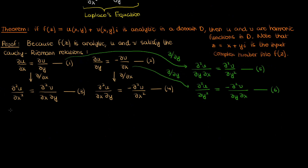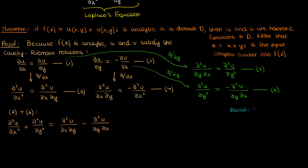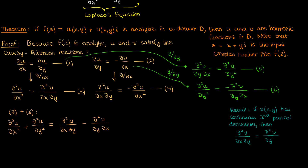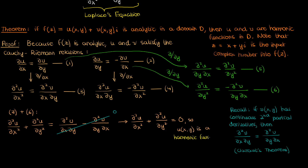Let's now combine these equations. We'll start by adding equations 3 and 6. When we do that we'll get the sums of the second partials of u in x and y on the left, and the difference between the mixed partials of v on the right. Now recall from basic multivariable calculus that if v is a nice continuous function with continuous second partial derivatives, then its mixed partial derivatives are equal — this is called Clairaut's theorem. Because of Clairaut's theorem my right-hand side becomes 0, and I find that the sum of the second partials of u in x and y equals 0, which means that u by definition is a harmonic function in our domain of interest.